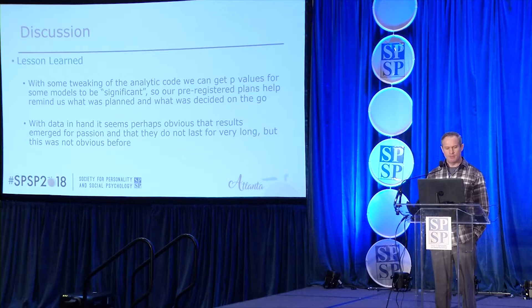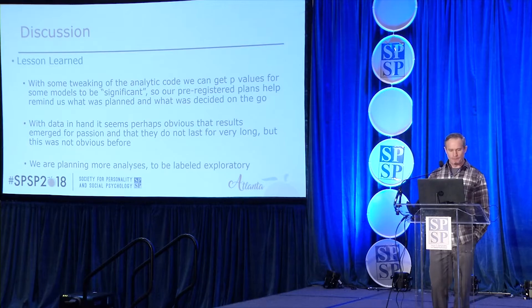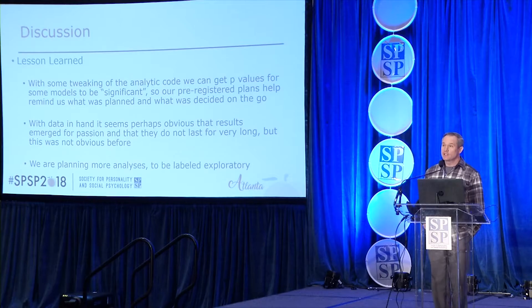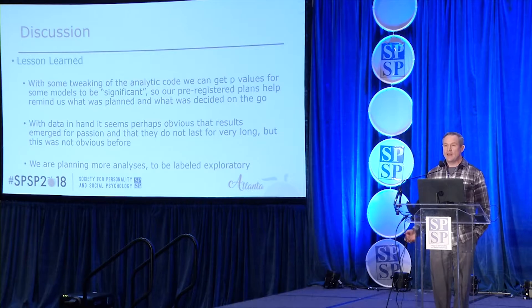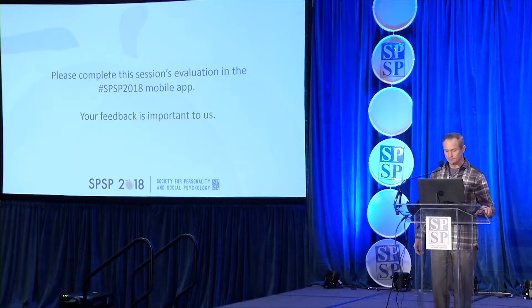With data in hand, it seems obvious that results emerged for passion—people say of course a sexuality-based intervention should only affect passion. But that wasn't obvious when we started; we had many reasons to think it could go beyond passion. Things always look more obvious after you've seen the data. We are planning more analyses labeled explicitly as exploratory or as following from our initial analyses. In that sense, a weight is lifted from our shoulder: we don't have to worry about how to package what we did and what we meant. It's documented. We've done our confirmatory work; now we've gone on to do further exploratory analyses, and here's what we think it all means.